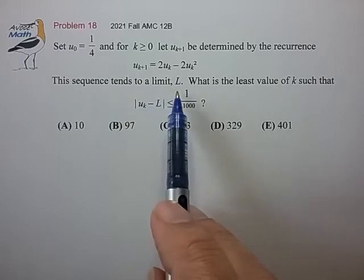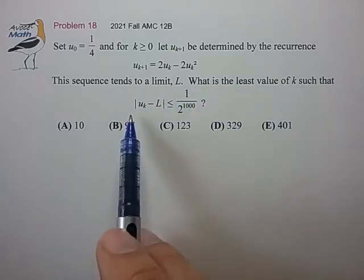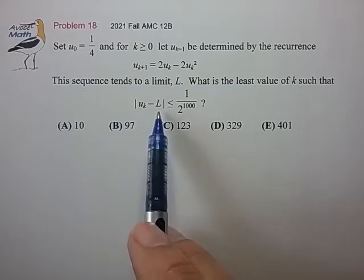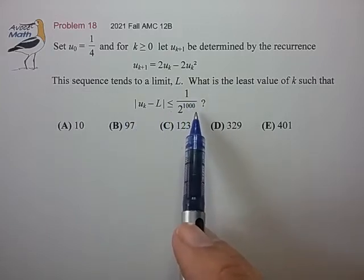This sequence tends to a limit L. What is the least value of k such that the absolute difference between uₖ and the limit is less than or equal to 1 over 2 to the 1,000th?